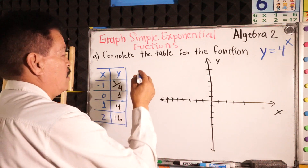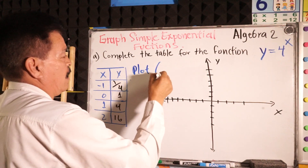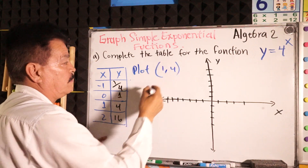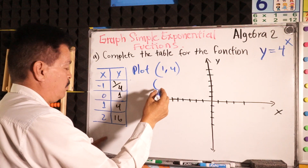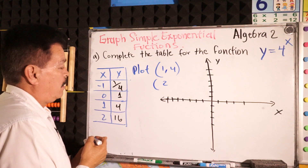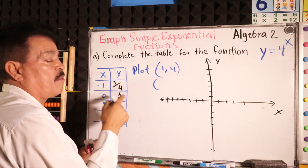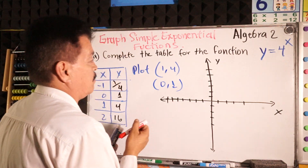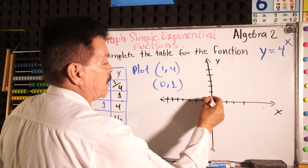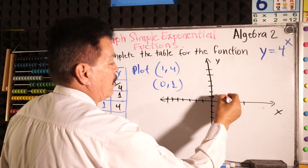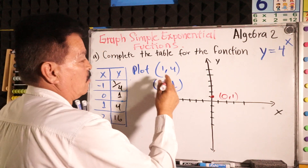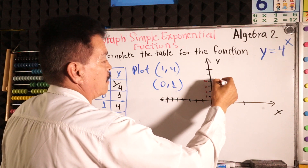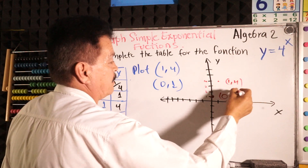Let's write the points. Plot (0, 1) — we have that point right here. And then (1, 4) — going 1 on x, then up to 4 on y. This is another point.